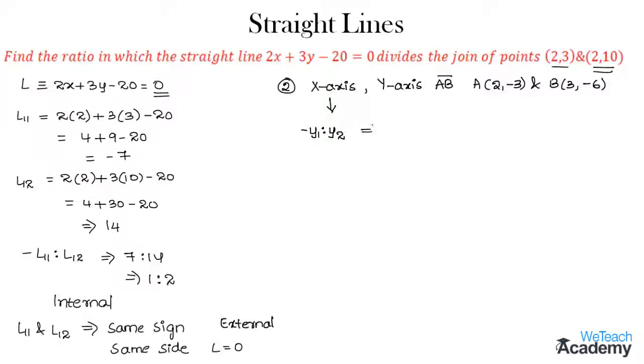Let us substitute the values. We get minus of y1 which is minus 3 to y2 that is minus 6. That implies we get minus of, and here minus minus gets cancelled, so 3 to 6.